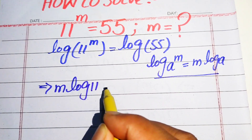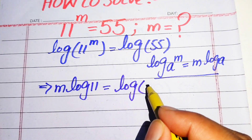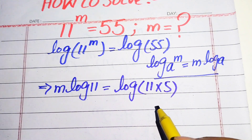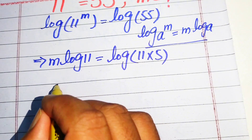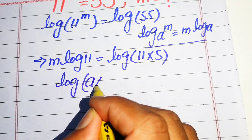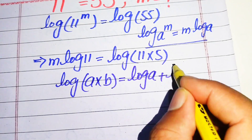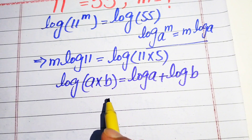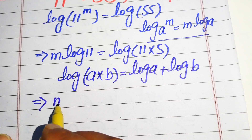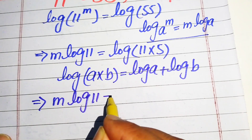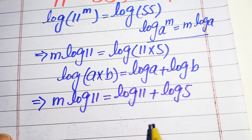According to this property, it is written as m times log 11 equals log 55. We write log 55 as log of 11 times 5. Then we use another property of log: log of a multiplied by b equals log of a plus log of b. So expanding the right hand side, we get m times log 11 equals log 11 plus log 5.